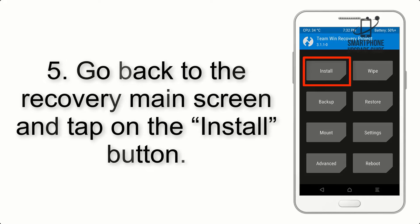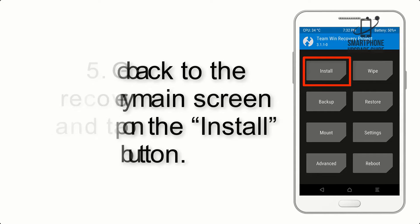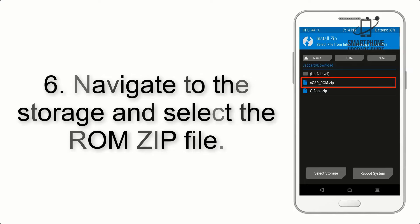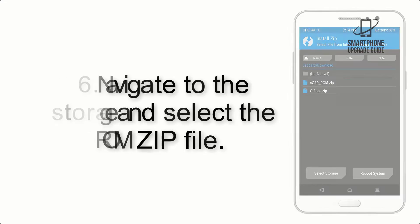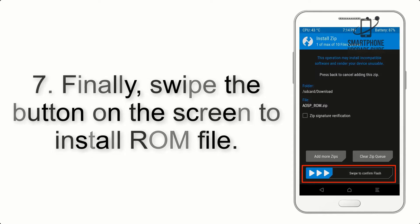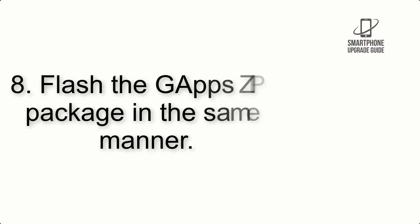Step 5: Go back to the recovery main screen and tap on the Install button. Step 6: Navigate to the storage and select the ROM zip file. Step 7: Finally, swipe the button on the screen to install the ROM file.